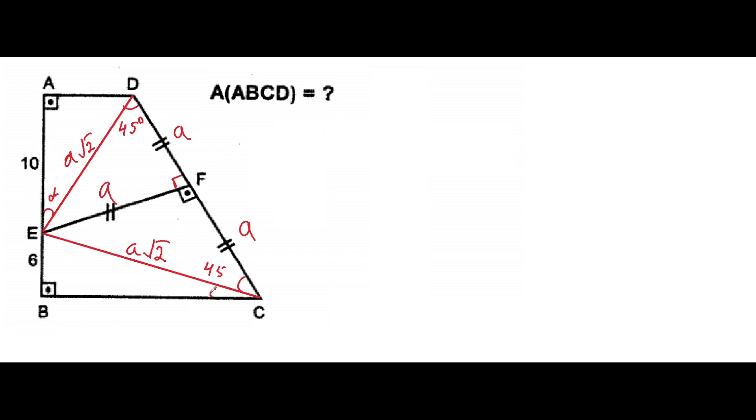Here we can find out cos α from triangle AED, and cos α will be equal to 10 over a√2. And from the triangle EBC, sin α will be equal to 6 over a√2.